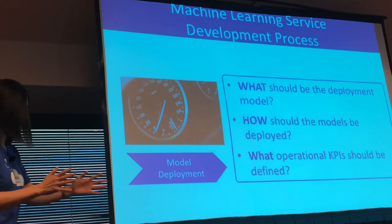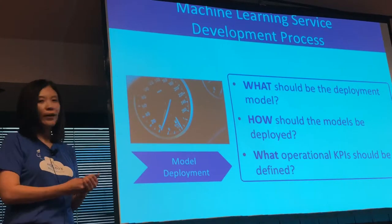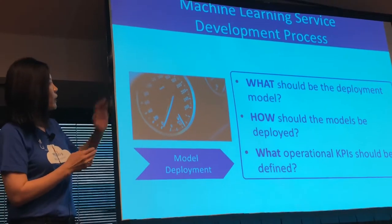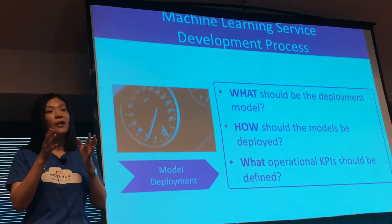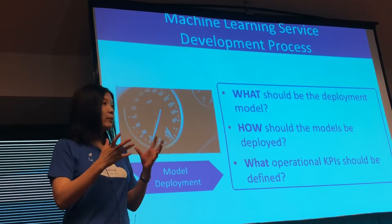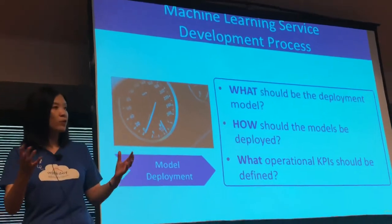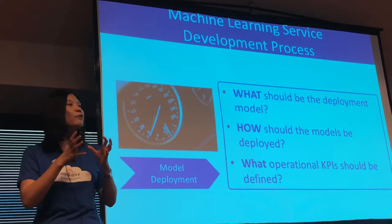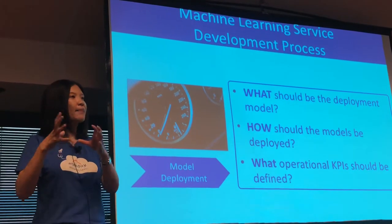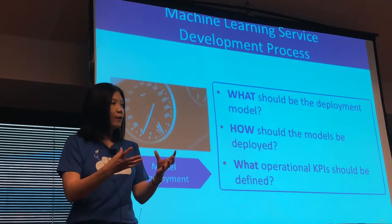After achieving target performance, the final piece is deployment — a super critical step for deploying machine learning as part of a product. The number one question: should we deploy a global model or per-tenant models? For consumer products, a single global model shared by all users is fine. But for many Workday use cases — especially HR — we deploy per-tenant models for multiple reasons: no data sharing between tenants due to privacy, and feature engineering differences per tenant.